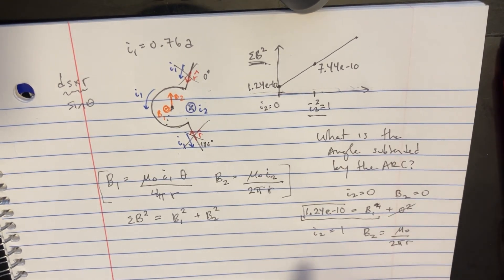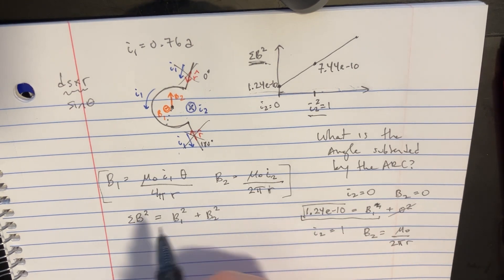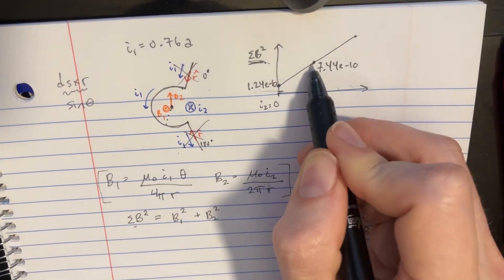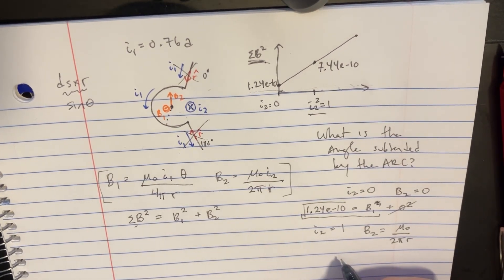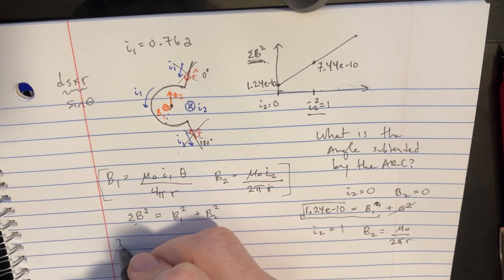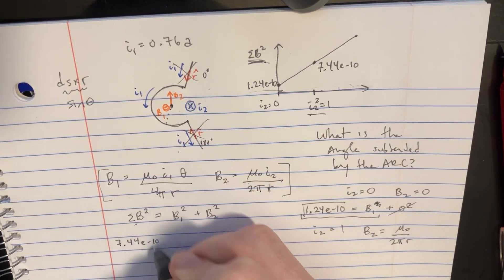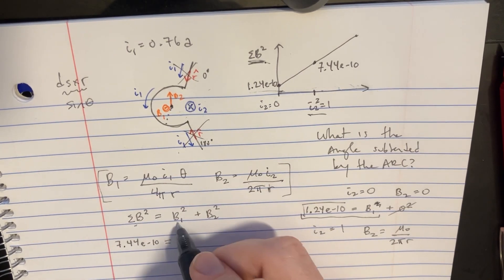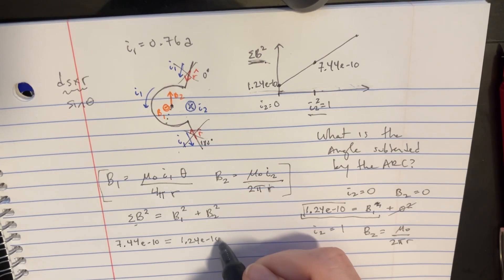And now we can kind of plug that into the equation as well, because we should also get the net B at that point, which would be 7.44. So let's see what that gives us. If we say 7.44, e to negative 10, the net equals, it's always going to be B1 is that. So 1.24, e to negative 10, we'll square it. So it's just that.